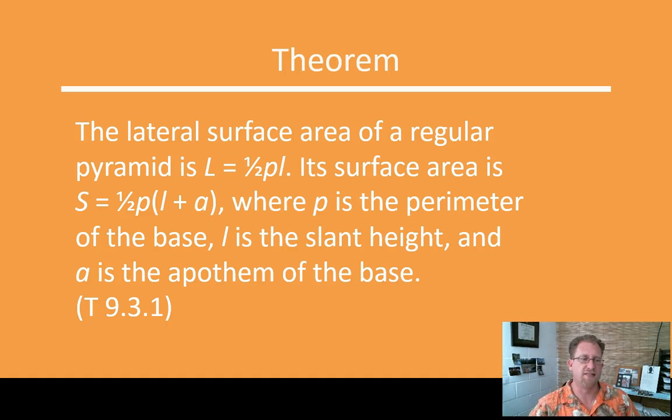If you just wrote those two formulas down from the last slide, you can just put in the notes in the margin there that that is in fact theorem 9.3.1. Or if you didn't, here's theorem 9.3.1. The lateral surface area of a regular pyramid is L equals 1/2 perimeter times slant length. Its surface area is S equals, they fixed it on this slide, 1/2 the perimeter times the sum of the slant height and the apothem. Where P is the perimeter, L is the slant height, and A is the apothem of the base. So if you have those two things, it'll be a lot happier for you. And actually, I don't think they put this in the third edition of the book. That's really handy and it'll help you out as we move forward.